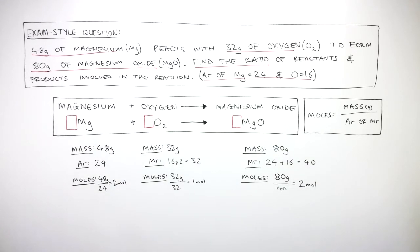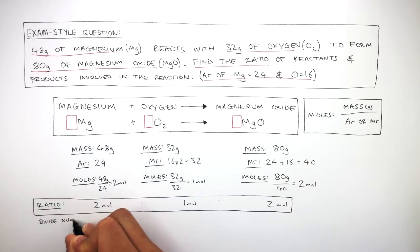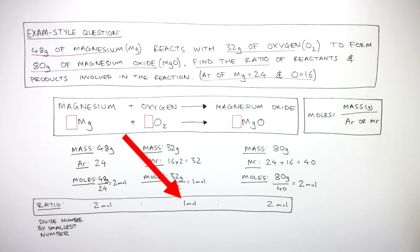The next step is to write out the ratio of moles. So it's 2 mole to 1 mole to 2 mole. We now need to divide the number by the smallest number, and here it's 1. So we do 2 divided by 1 equals 2, 1 divided by 1 equals 1, and 2 divided by 1 equals 2.